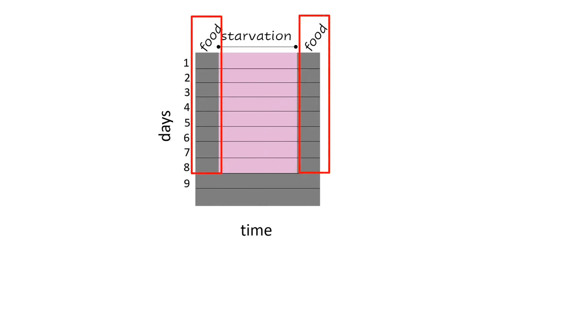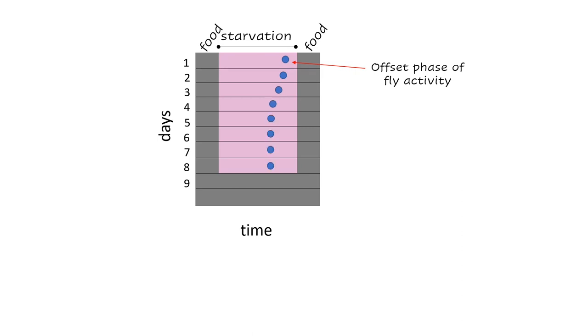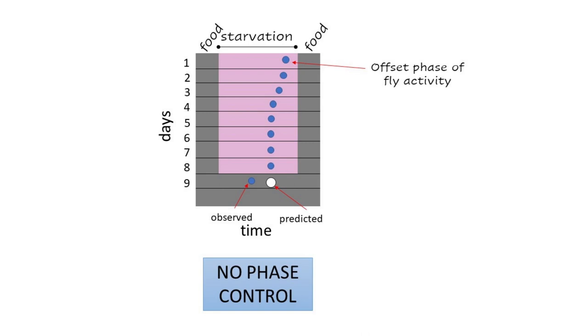We performed similar experiments with flies in our lab where they were given food only for certain durations of the day and were tested for phase control. We found that on the day when cyclic food cues were removed, the observed phase of activity was different from the predicted phase. This indicates that fly clocks are not good predictors of food time.